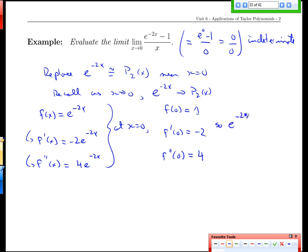So e to the negative 2x can be approximated by the second degree polynomial of 1 minus 2x minus 0 - that's our point, we're doing this near x equals 0 - plus 4 over 2. Remember the 2 in the denominator for the second derivative term. And if we can tidy that up a bit: 1 minus 2x plus 2x squared. So e to the negative 2x can be approximated by this polynomial.